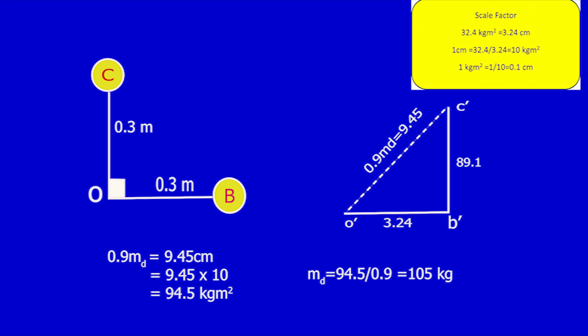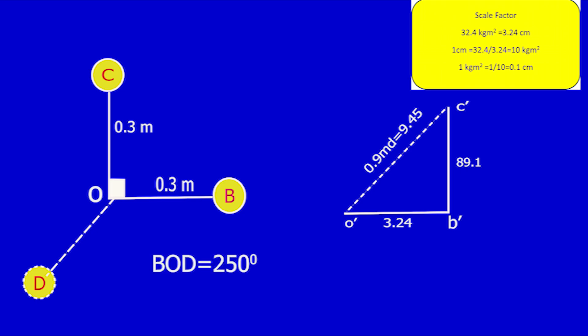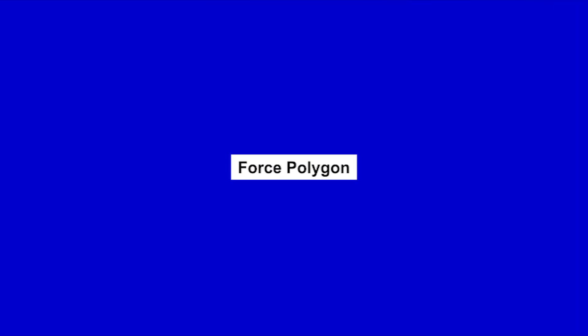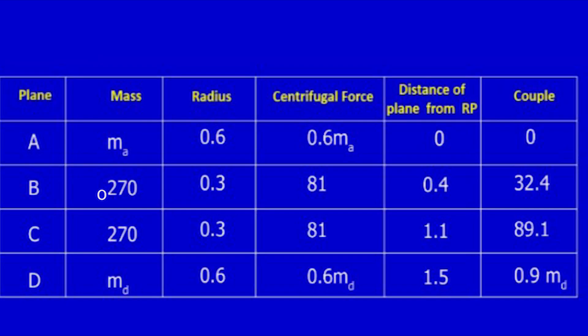Move line OD from the couple polygon back to the angular diagram. The orientation of mass D is 250 degrees from mass B. Now for the force polygon: from the table, 0.9·MD equals 0.9 × 105 equals 94.5 kg·m.